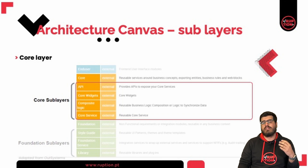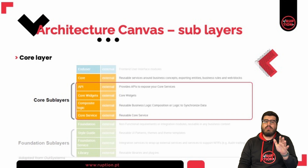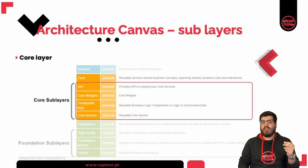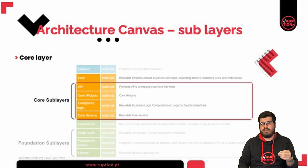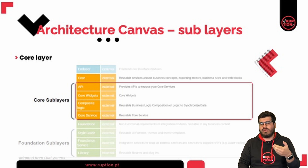On the API sub layer, we expose an API with our core services — it is very important to focus on the expose part, since we can consume or expose APIs and the sub layer we use for each is different. On core widgets, we place the module containing our web blocks associated with business logic. On composite logic, we encapsulate reusable business logic or logic to synchronize data. The last core sub layer is core service, where we create our data model and connect the business rules with the integrations from our foundation layer.